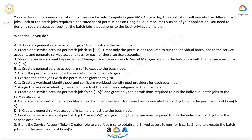Option C: 1. Create a workload identity pool and configure workload identity pool providers for each batch job. 2. Assign the workload identity user role to each of the identities configured in the providers. 3. Create one service account per batch job BSA-1 through BSA-5 and grant only the permissions required to run the individual batch jobs to the service accounts. 4. Generate credential configuration files for each of the providers. Use these files to execute the batch jobs with the permissions of BSA-1 through BSA-5.